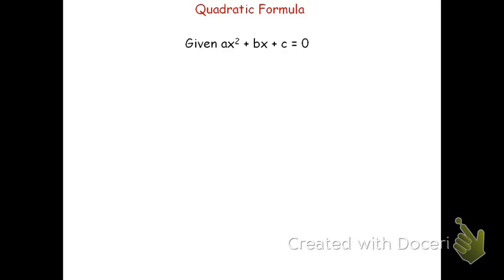The steps to doing the quadratic formula are going to be these. First, given any quadratic equation — that is, anything in the form ax squared plus bx plus c equals zero — we're going to start by identifying the a, b, and c values. Now if the equation given was not in standard form, we're going to rewrite it in that form first. We can't find the values of a, b, and c until we have it in standard form.